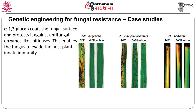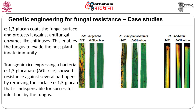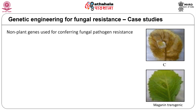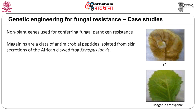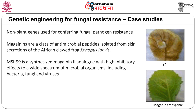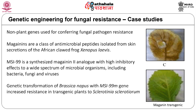Alpha-1,3-glucan coats the fungal surface and protects it against antifungal enzymes like chitinases, enabling the fungus to evade the host plant's innate immunity. Transgenic rice expressing a bacterial alpha-1,3-glucanase (AGL rice) showed resistance against several pathogens by removing the surface alpha-1,3-glucan that is indispensable for successful infection by the fungus. Magainins are a class of antimicrobial peptides isolated from skin secretions of the African clawed frog Xenopus laevis. MSI-99 is a synthesized magainin-2 analog with high inhibitory effects against a wide spectrum of microbial organisms including bacteria, fungi and viruses. Genetic transformation of Brassica napus with the MSI-99 gene increased resistance in transgenic plants to Sclerotinia sclerotiorum.